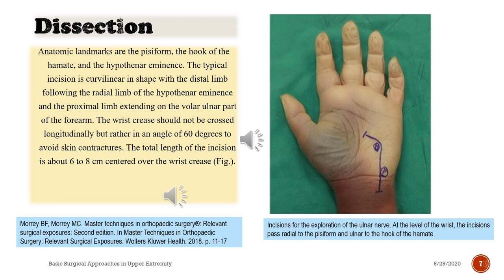Incisions for the exploration of the ulnar nerve at the level of the wrist pass radial to the pisiform and ulnar to the hook of the hamate.